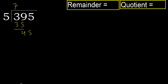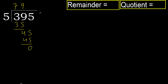Next, bring down 5 to get 45. 5 multiplied by 9 is 45, which is not greater. 45 minus 45 is 0. There is no next digit, therefore finish.